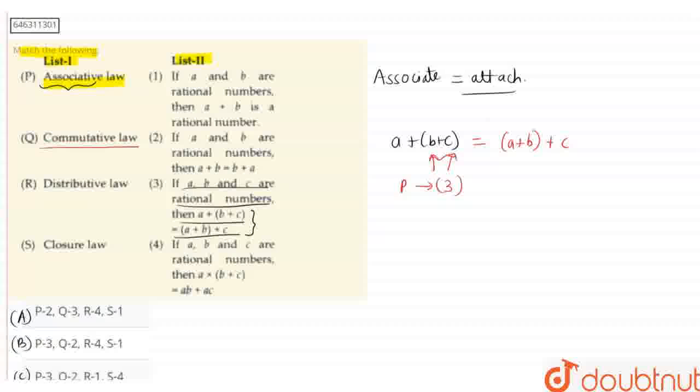Now comes the commutative law. What is the meaning of commutative? It means commute means to replace or exchange with each other. The commutative law says that if A plus B equals B plus A.